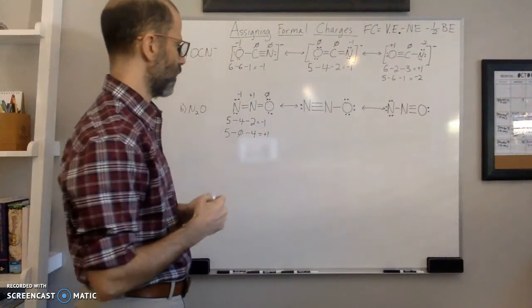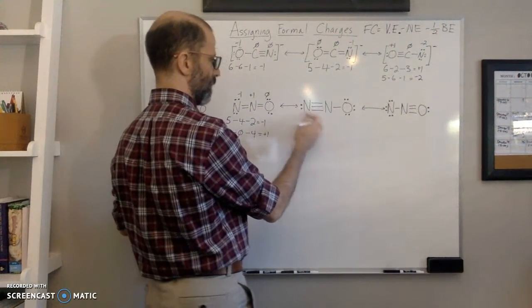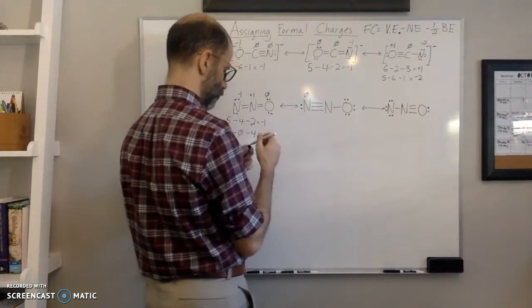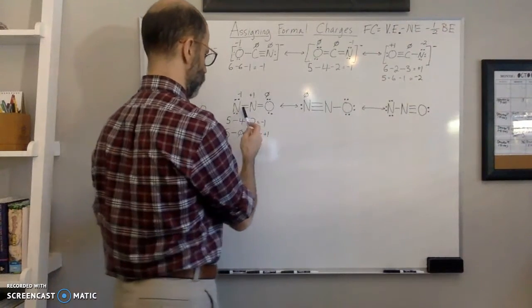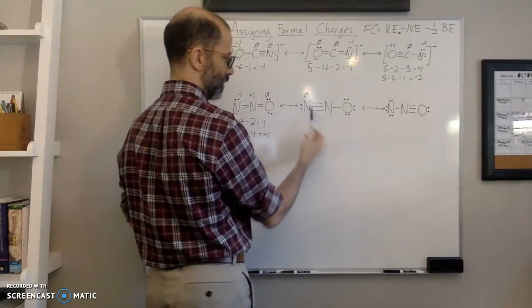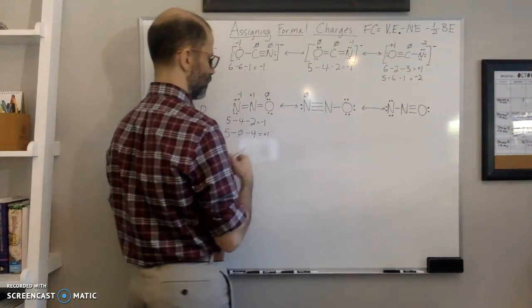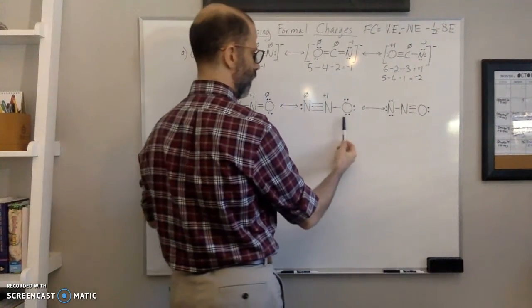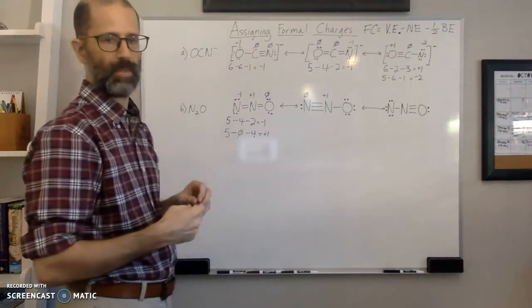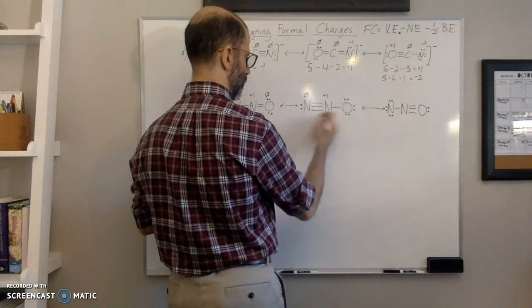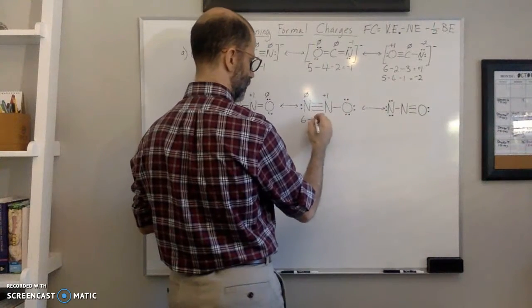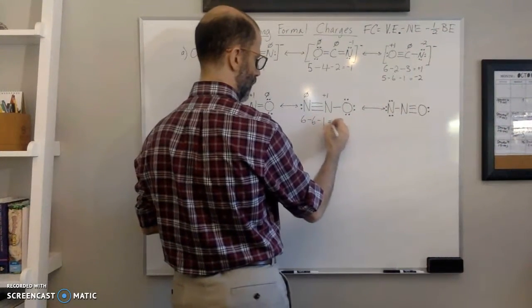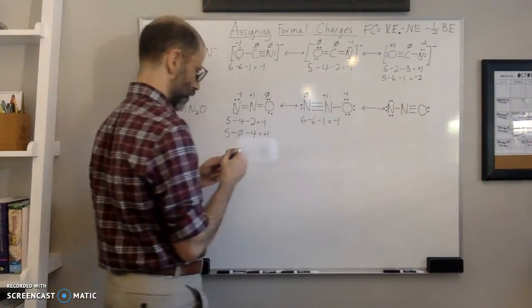In the second structure, this nitrogen fits the bonding pattern with three bonds and one lone pair, so its formal charge is zero. The other nitrogen again has four bonds, so by the same bonding pattern, it also has a plus one formal charge. The oxygen in this structure does not fit the bonding pattern: six valence electrons minus six lone pair electrons minus one bond electron gives negative one. So that oxygen has a negative one formal charge.